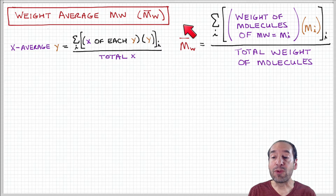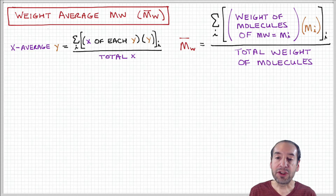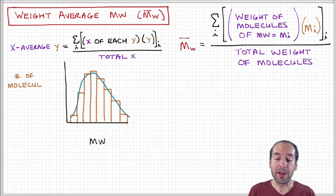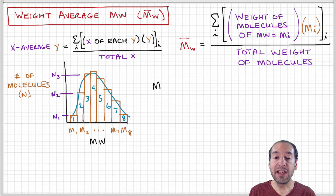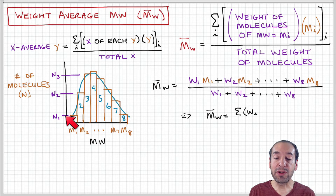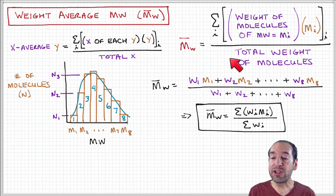By that rule, the weight average molecular weight is the product of the weight of molecules that have molecular weight mi, times mi, divided by the total weight of molecules in our sample. Let's calculate this for a polymer sample that has a distribution of molecular weights divided into eight bins, with the number of molecules in each bin shown as N1, N2, up to N8.